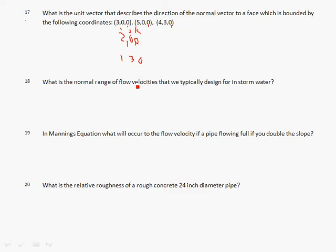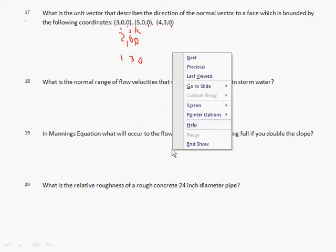Normal range of velocities of flow in a pipe, three to ten, it goes up from there, but you need to get that in your head so you have something to check against. Nineteen, Manning's equation, again, you're writing out Manning's equation, which is the one that has slope to the one-half power or the square root, and the relative roughness of a concrete twelve twenty-four inch diameter pipe, you have to realize you need to go with the roughness of the pipe divided by two feet. Those roughness numbers are given in feet.